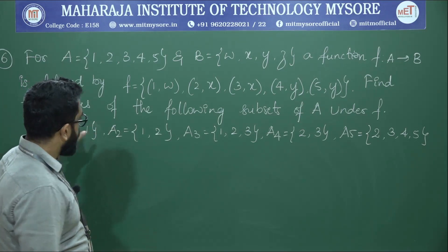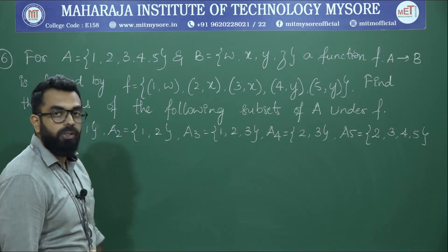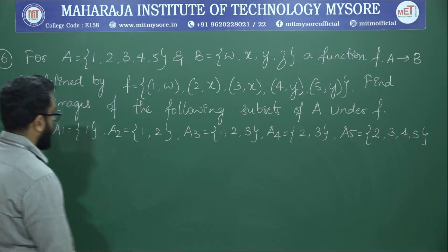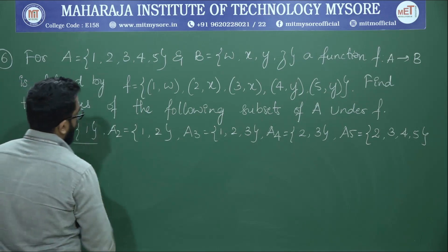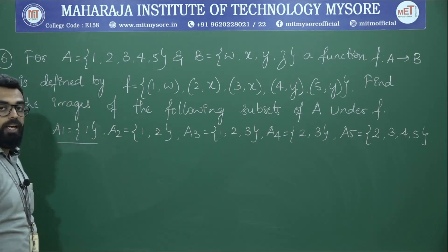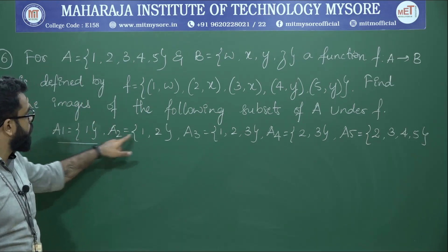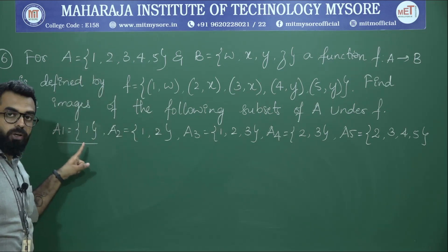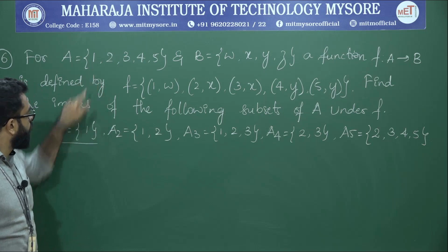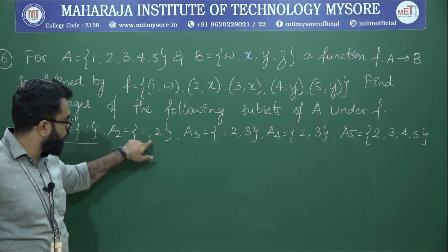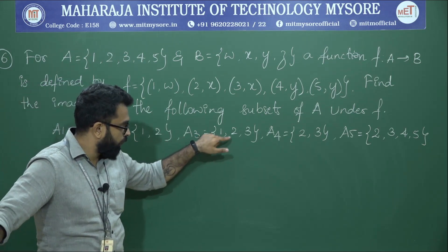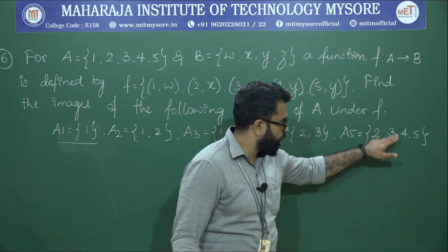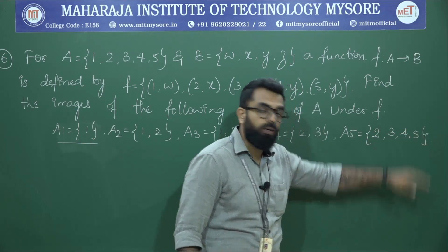The question asks us to find the image of the following subsets of A under the function f. The subsets are: A1 = {1}, A2 = {1, 2}, A3 = {1, 2, 3}, A4 = {2, 3}, and A5 = {2, 3, 4, 5}.